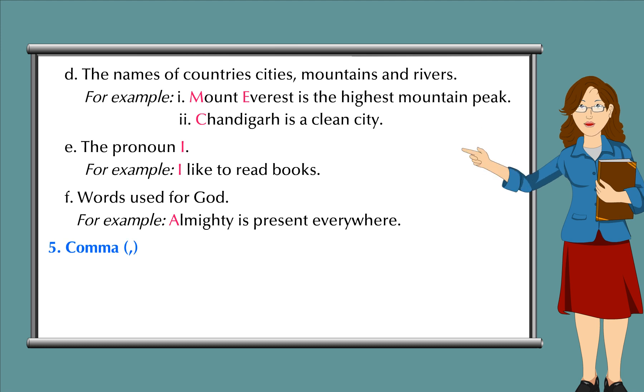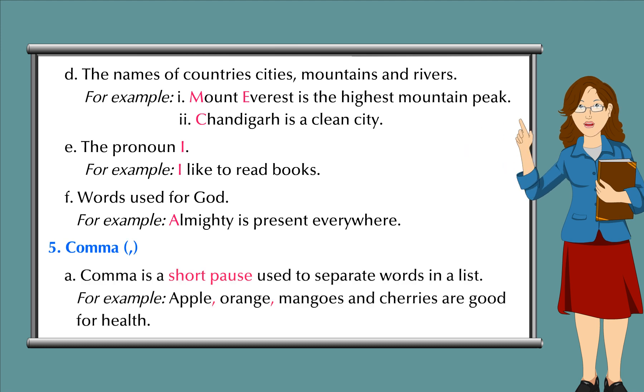5. Comma. A. Comma is a short pause used to separate words in a list. For example, apple, orange, mangoes and cherries are good for health.